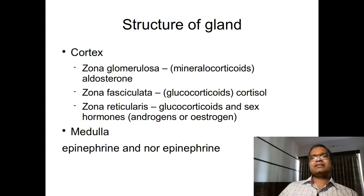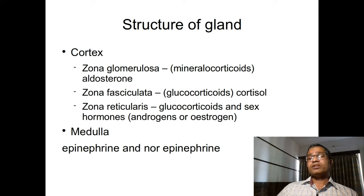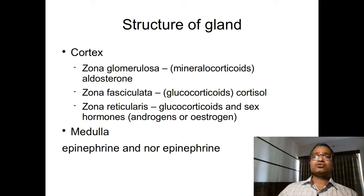Regarding hormone secretion: zona glomerulosa secretes mineralocorticoids, mainly aldosterone. Aldosterone controls sodium reabsorption from the nephrons of the kidney through an exchange mechanism — sodium is exchanged with potassium and hydrogen ions.